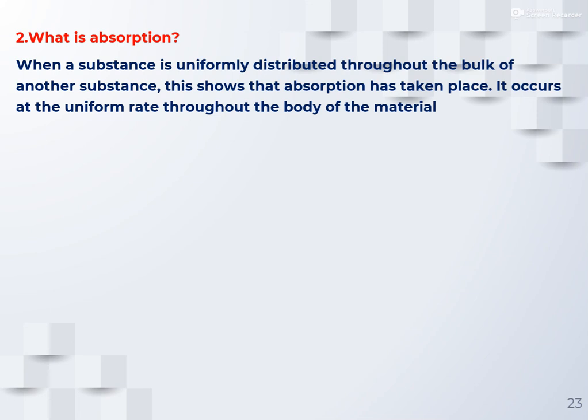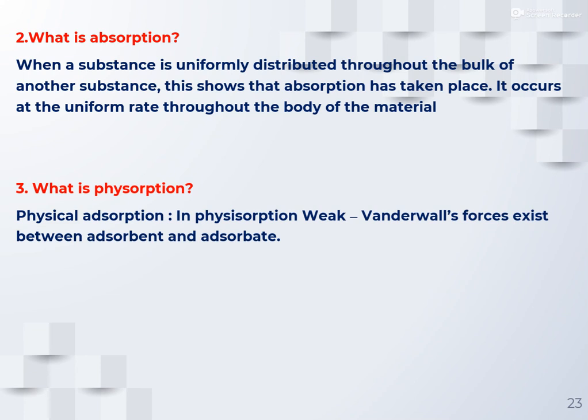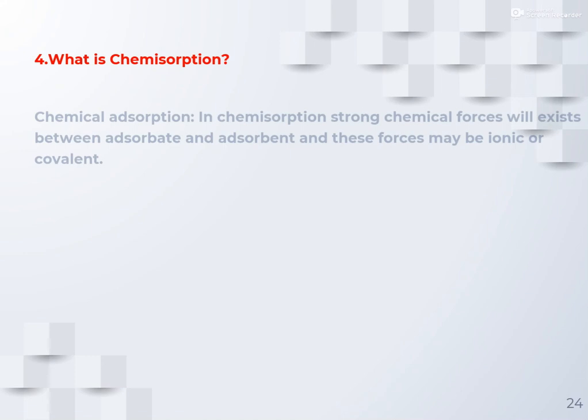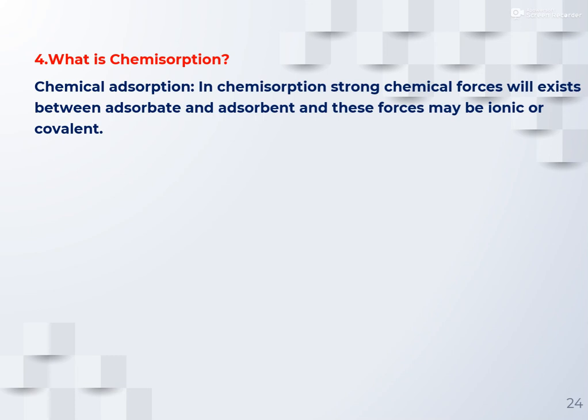What is physisorption? Physisorption is related to weak van der Waals forces existing between the adsorbate and adsorbent. Examples include: charcoal adsorbing gases, charcoal adsorbing acetic acid, and silica gel adsorbing moisture. What is chemisorption? Chemisorption is the phenomenon of adsorption in which chemical forces — ionic or covalent — exist between adsorbate and adsorbent, forming ionic or covalent bonds.